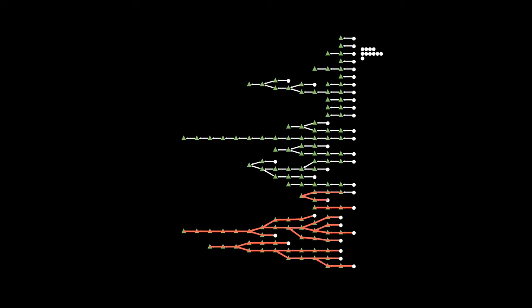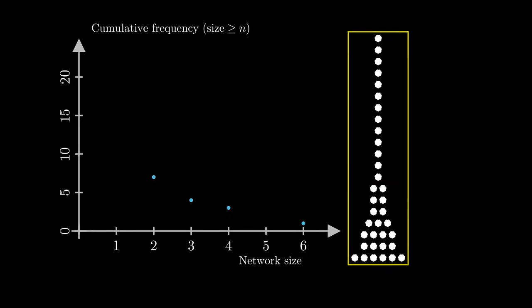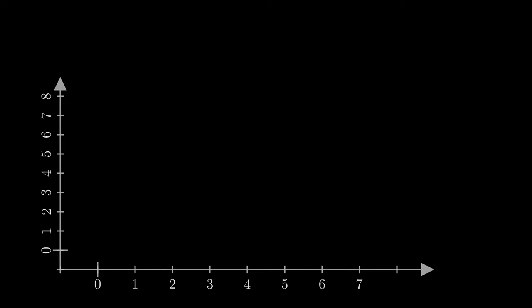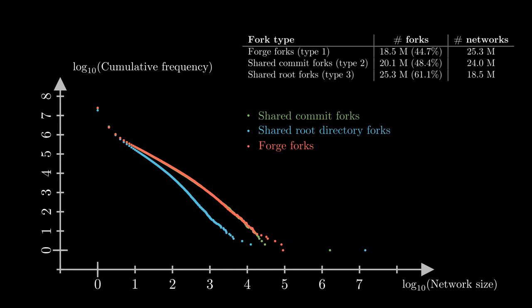Here is the same algorithm running on a larger graph. To get a sense of how these repositories are distributed, we can plot the cumulative frequency for each network size — that is, the number of networks of size larger than n. When we run this algorithm on the entire graph, we get the distribution shown here in logarithmic scale. We can then superimpose the distribution of our baseline from the GHTorrent dataset, and we see it's not very far from the distribution using intrinsic definitions — which is encouraging. It suggests that we overlook between 4% and 16% of all repositories when using the forge fork definition compared to intrinsic forks.